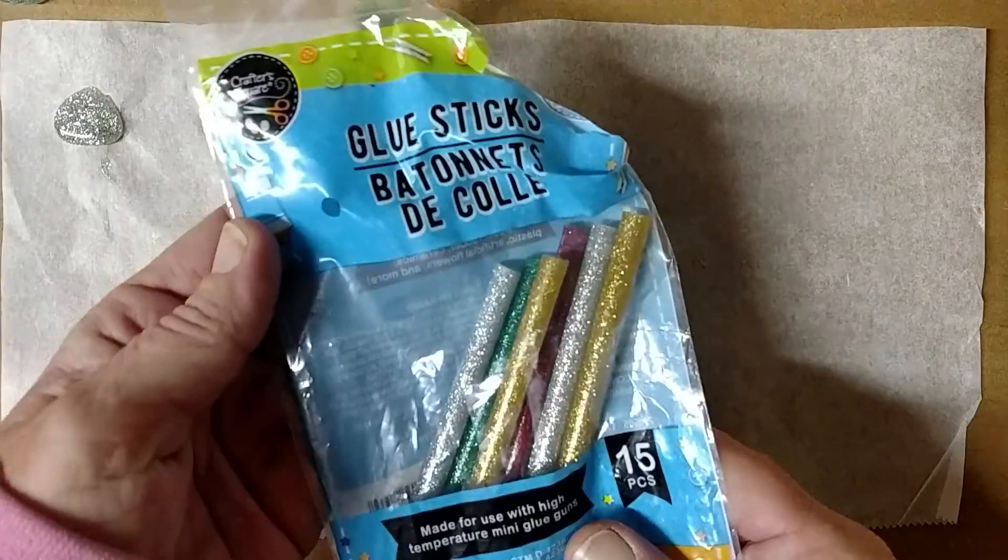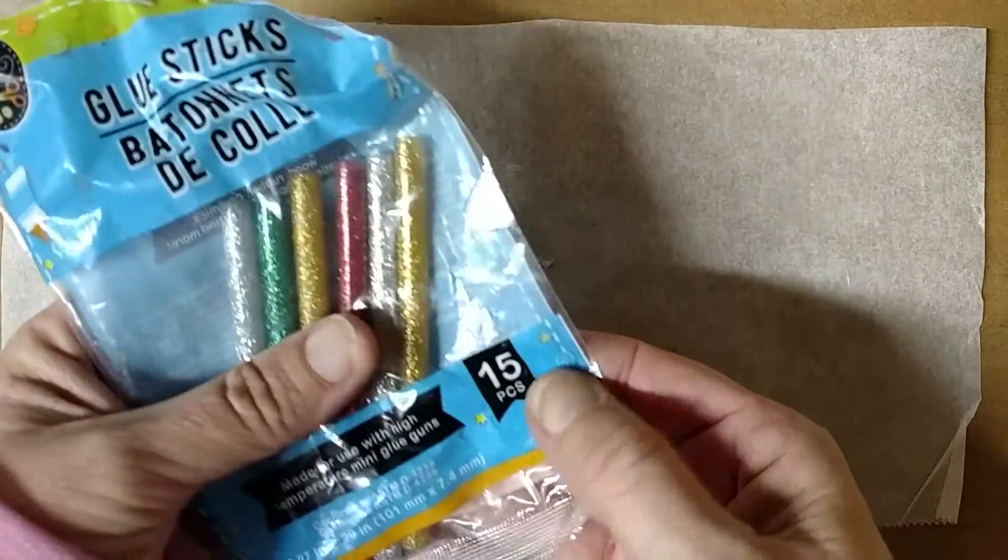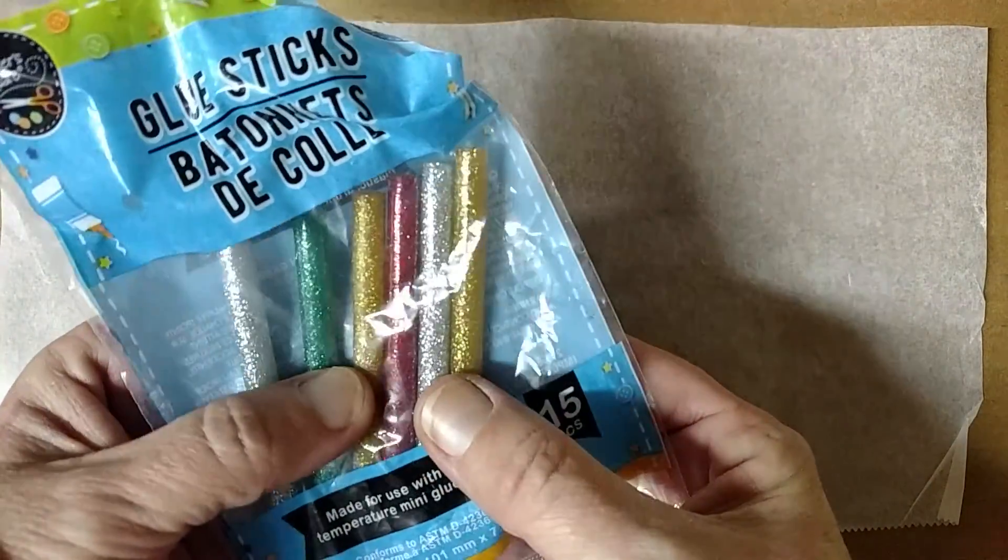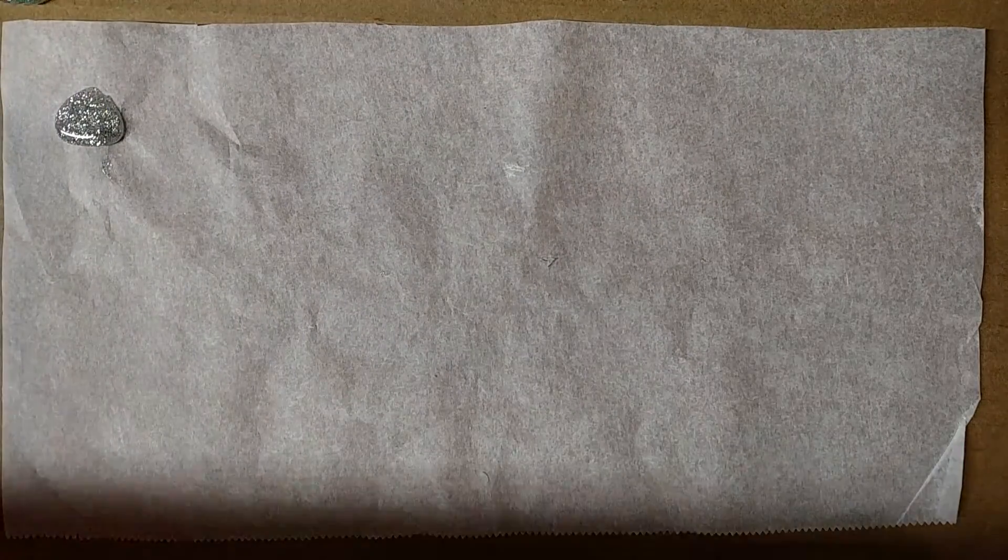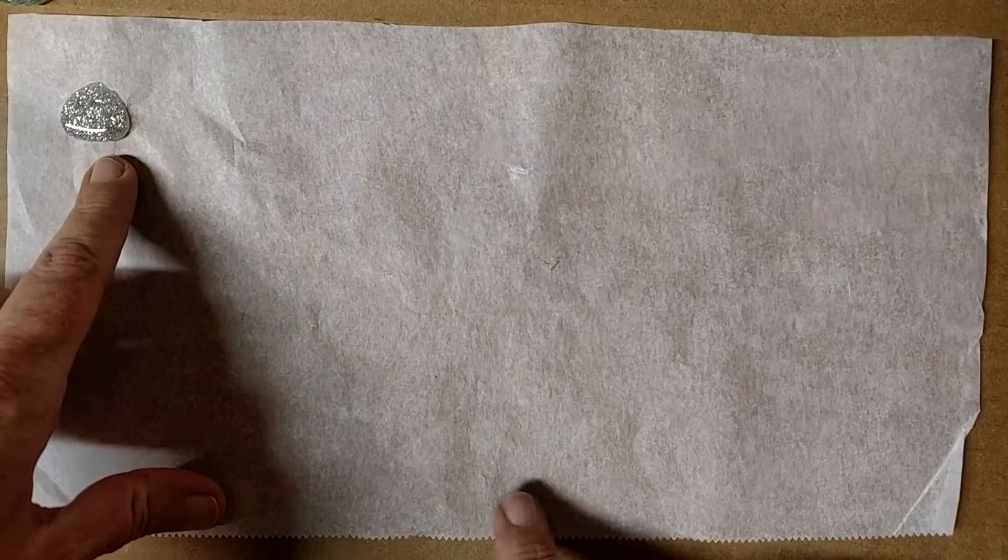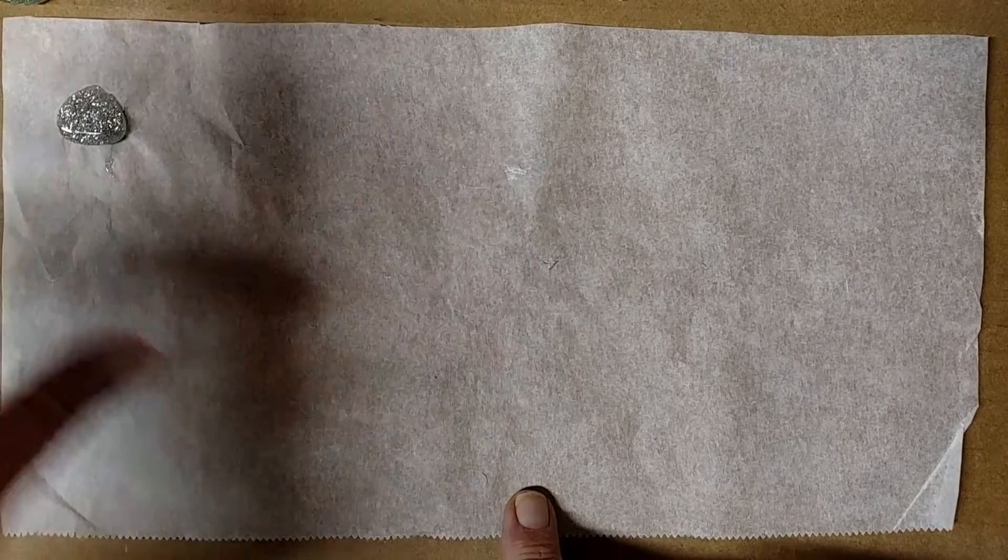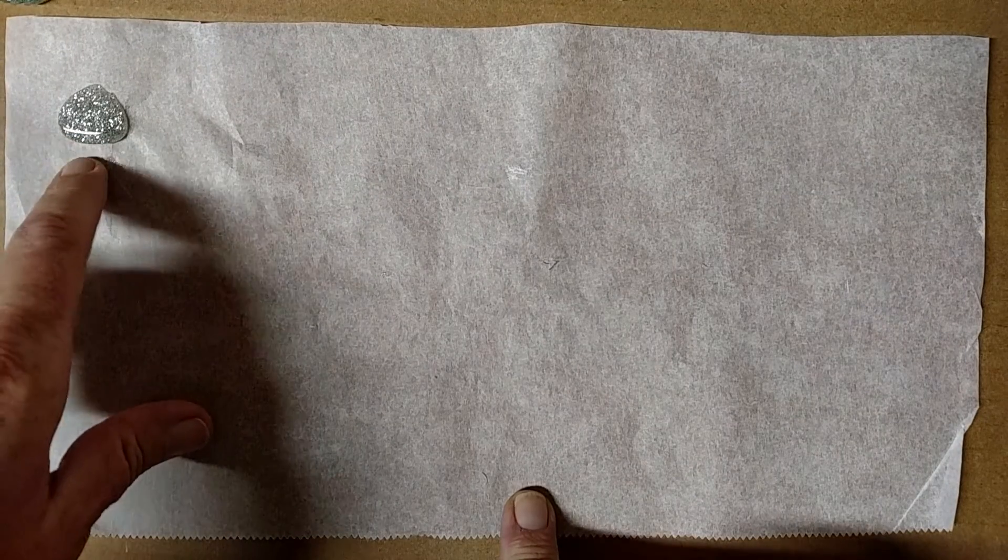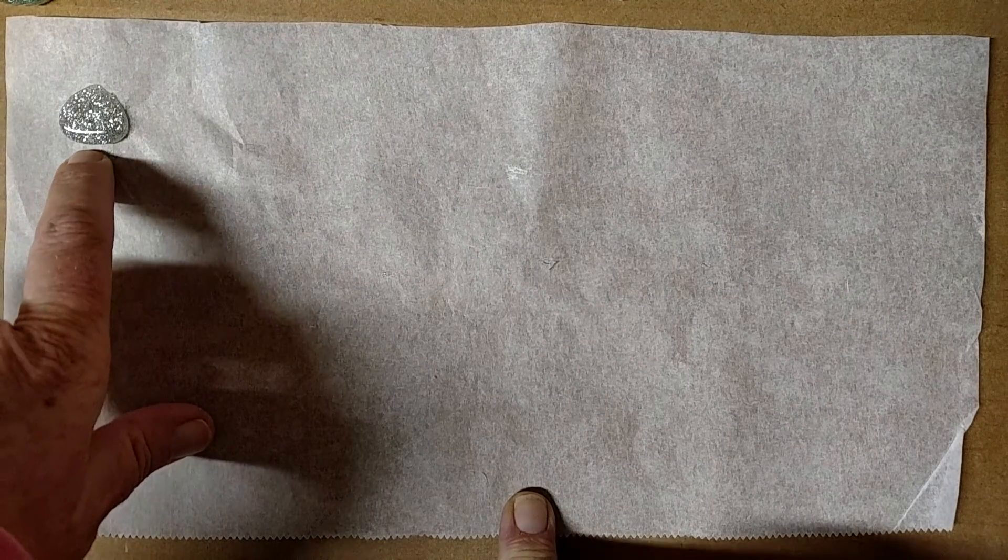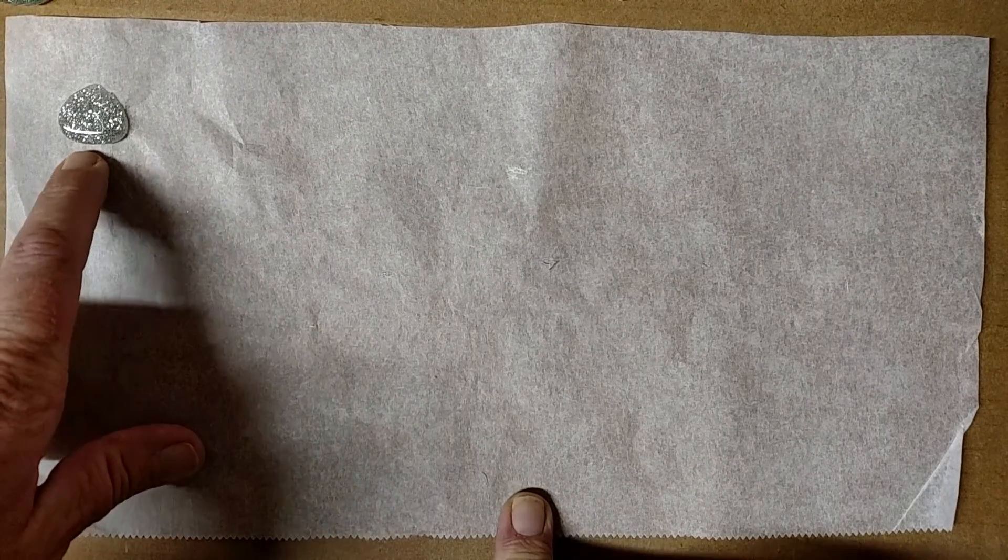I'm using glitter glue sticks from the dollar store, 15 in a package and they come with these different colors. So this is great. I'm going to be using the green one, the red one and the gold one today. You see the little glob there. That was the previous video I had done some snowflakes and that's the leftover silver glue stick from my glue gun.